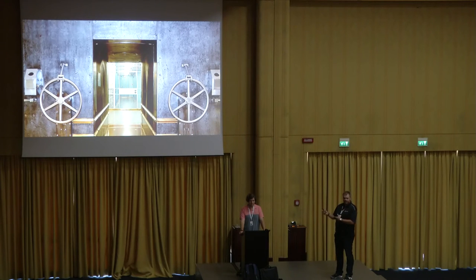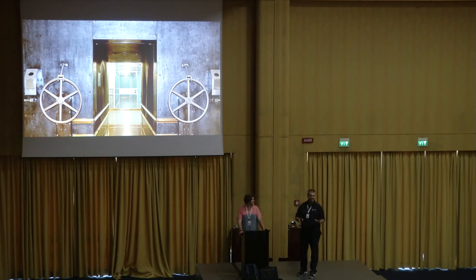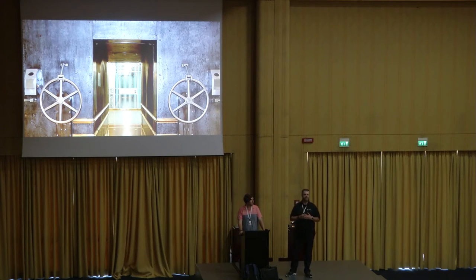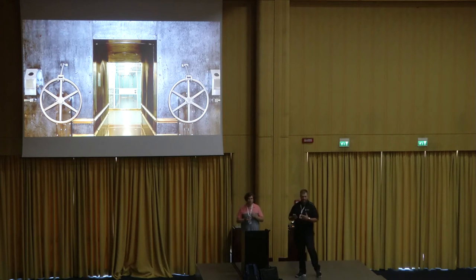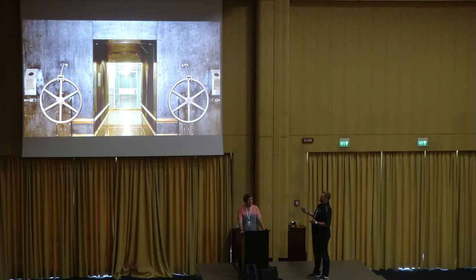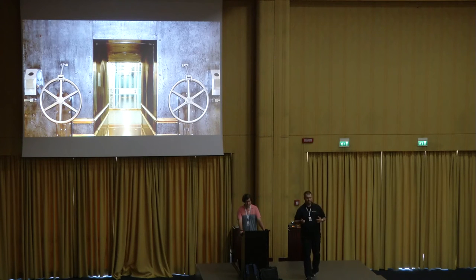Before we get there, can anyone tell me what this is and where it is? It's a vault. Everyone always guesses Fort Knox — it's not Fort Knox. This is in the depths of the Federal Reserve in New York City, the vault that houses gold for pretty much every country but our own. The reason I bring this up: this is how I think about mobile security and fingerprint readers. This massive door requires two people to open it. The way I look at fingerprint readers instead — it's just like a screened-in porch. It's very easy to get through, and we're not thinking about that from a security perspective.